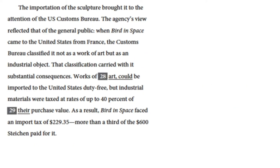The importation of the sculpture brought it to the attention of the U.S. Customs Bureau. The agency's view reflected that of the general public. When Bird in Space came to the United States from France, the Customs Bureau classified it not as a work of art, but as an industrial object. Works of art could be imported to the United States duty free, but industrial materials were taxed at rates of up to 40% of their purchase value. As a result, Bird in Space faced an import tax of $229.35 — more than a third of the $600 Steichen paid for it.